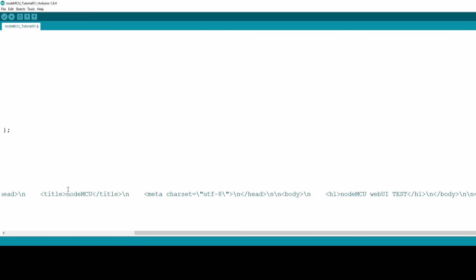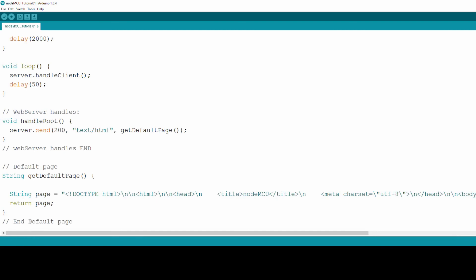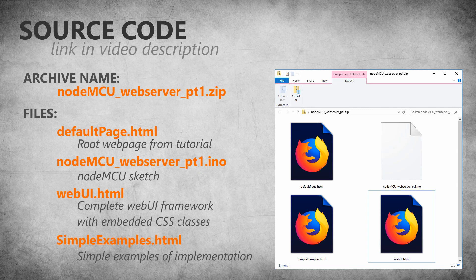Now upload this sketch to the NodeMCU board and test it — it should work just fine. This concludes the first video for setting up NodeMCU and basic workflow with HTML. In the source code download link in the description you will find the NodeMCU sketch from this video, the defaultpage.html file, and also a webui.html file which is a complete implementation of the web user interface with embedded CSS classes. A follow-up video with details about the code in webui.html will be released, but if you are familiar with HTML feel free to use it already.